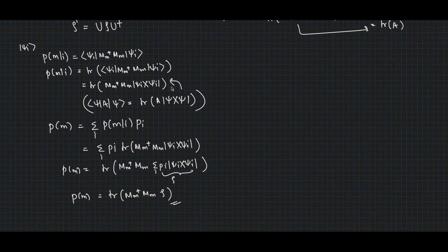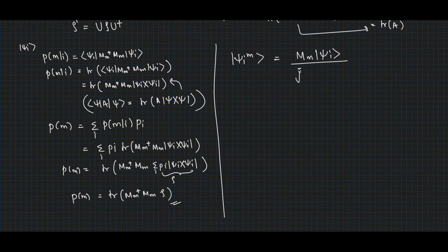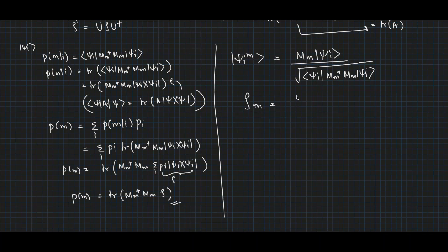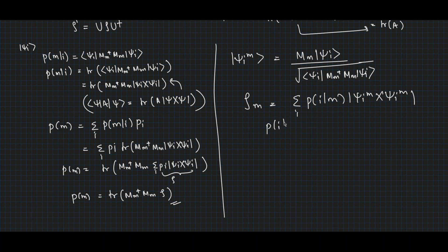After obtaining result m, the post-measurement state |ψ_i^m⟩ = M|ψ_i⟩ / √(⟨ψ_i|M†M|ψ_i⟩). The corresponding density operator for the ensemble of states |ψ_i^m⟩ is ρ_m = Σ_i P_i^m |ψ_i^m⟩⟨ψ_i^m|, where the probability of state i after result m, P_i^m, equals the probability of getting outcome m given initial state i times the probability of state i, divided by the total probability of getting m.